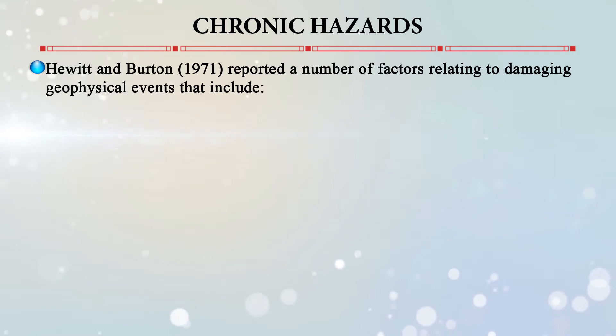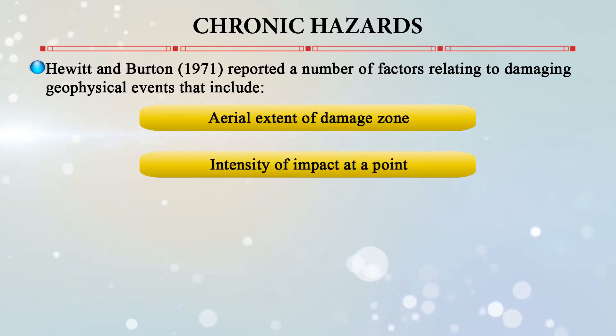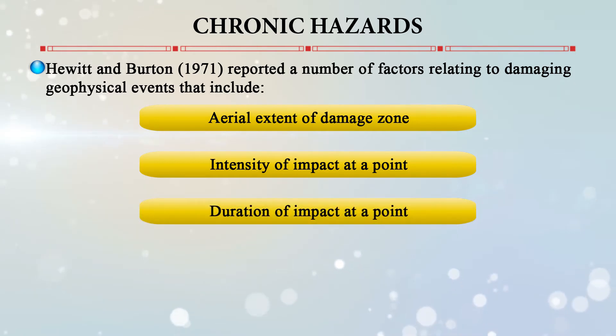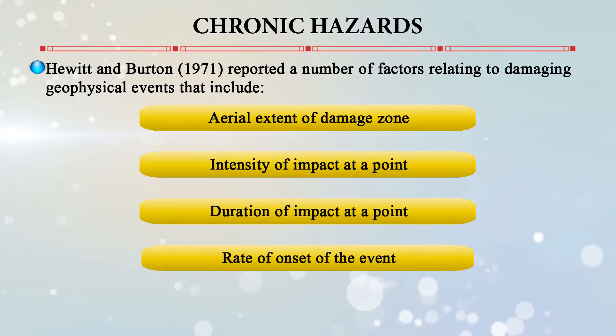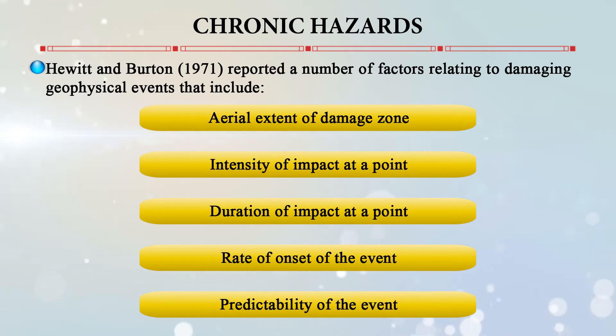Hewitt and Burton in 1971 reported that factors relating to damaging geophysical events include the aerial extent of the damage zone, the intensity of impact at a certain point, duration of impact at a point, rate of onset of the event, and predictability of the event. Natural hazards can also be classified into rapid onset and slow onset hazards.